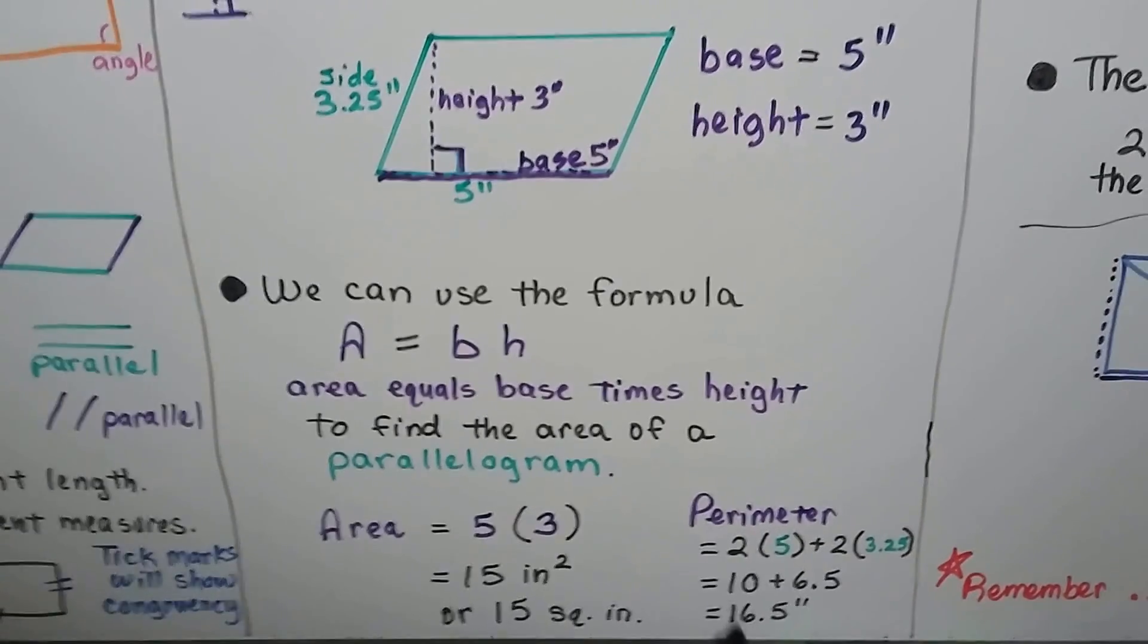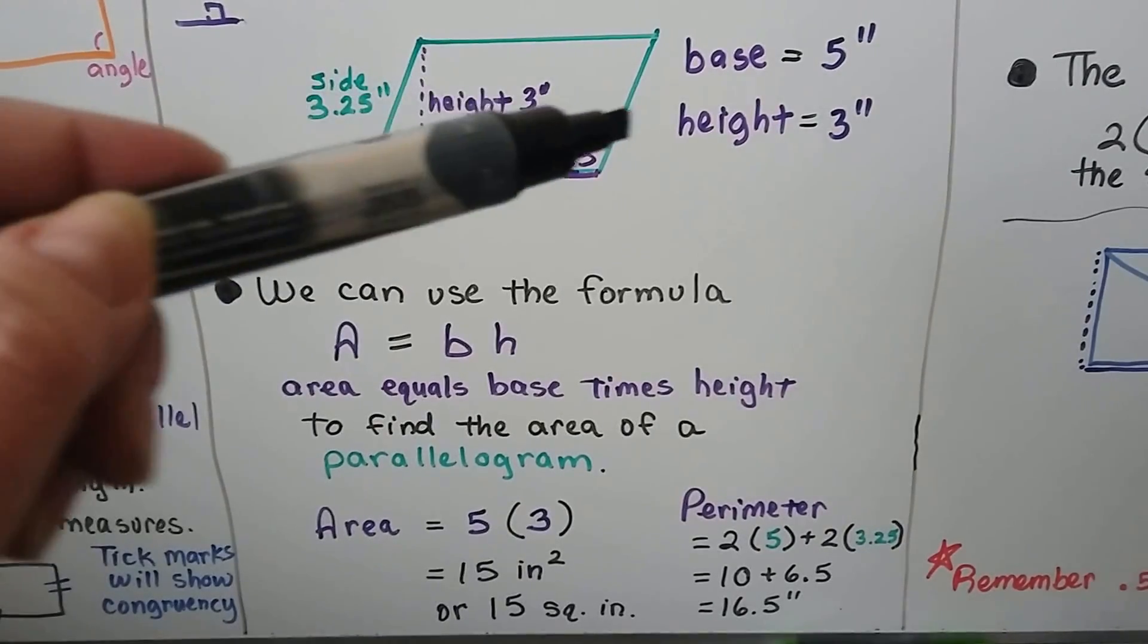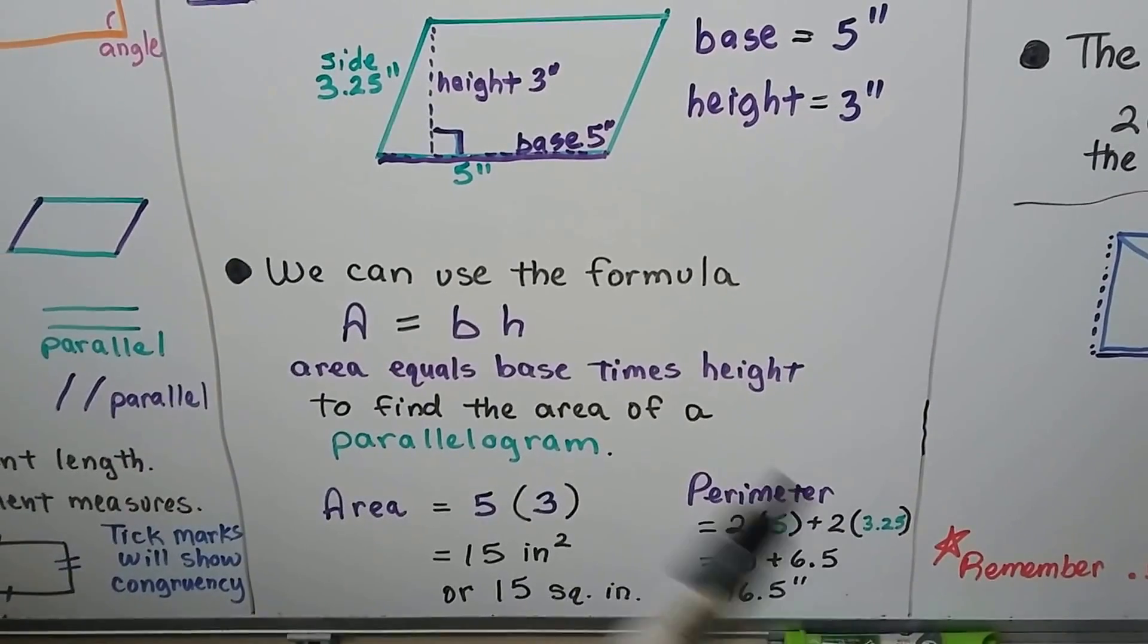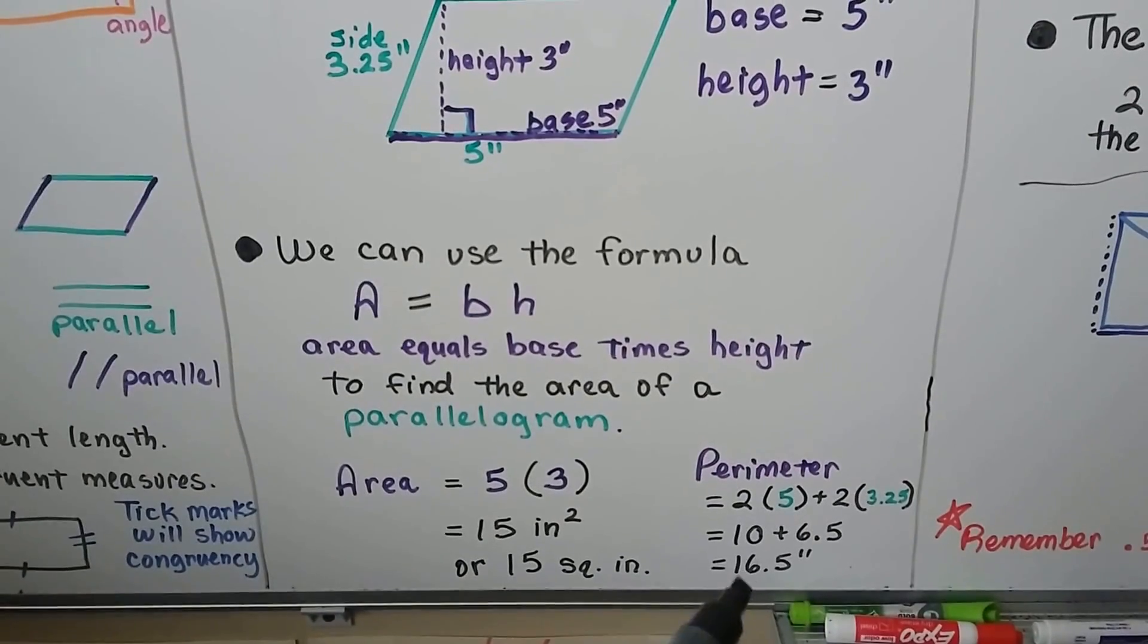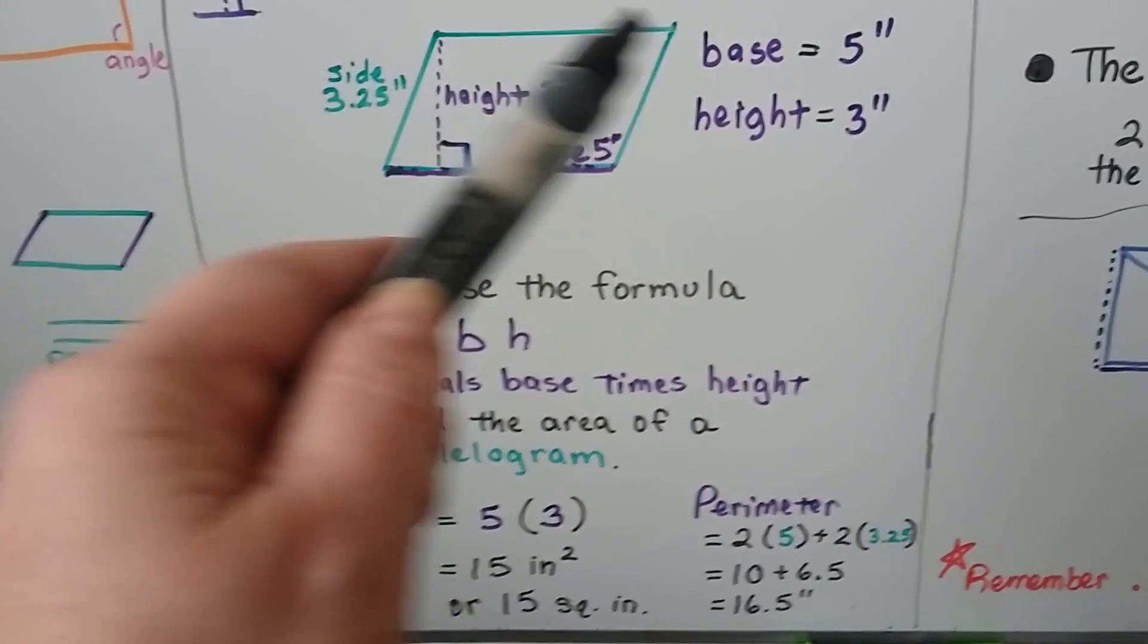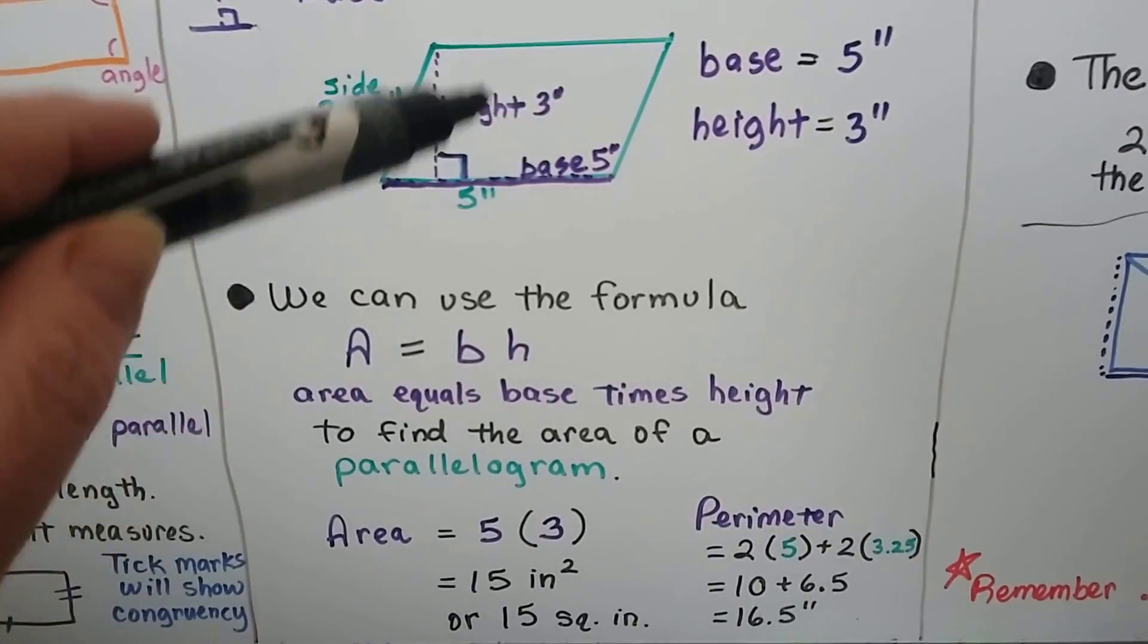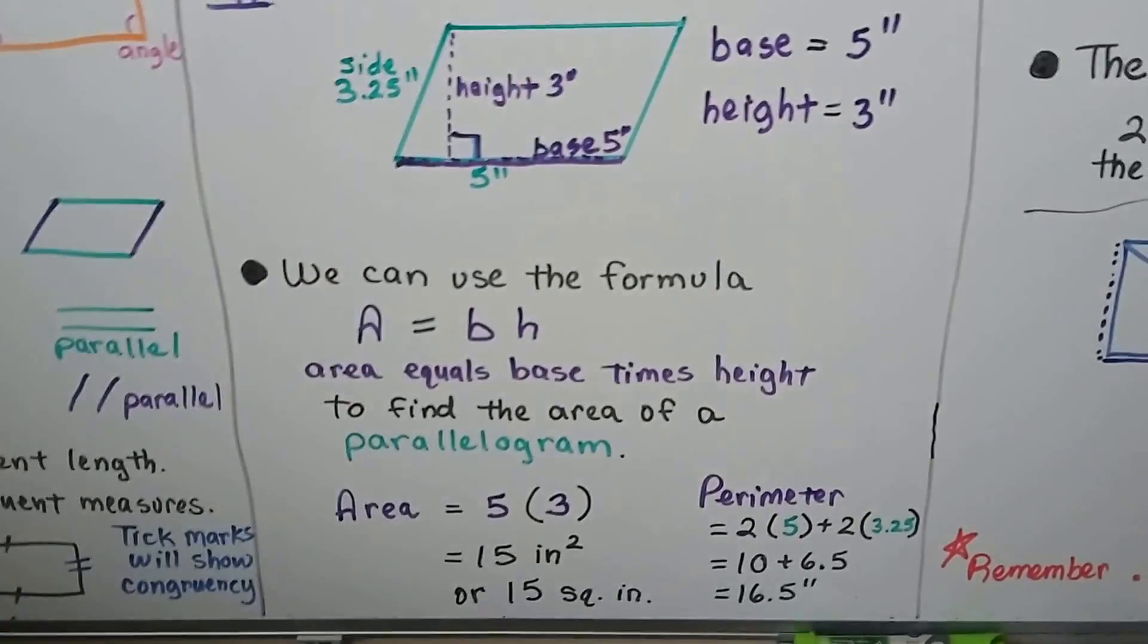Now the perimeter would be different. It would be five inches plus five inches plus 3.25 plus 3.25. We can also look at it as two times five plus two times 3.25. Do our multiplication and our addition and we get 16.5 inches for the perimeter going around. If that was a yard, that would be the fence. But the area is the inside, and that would be squared, like there's little squares in here that we're counting.